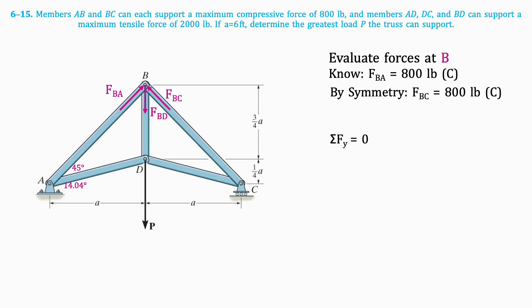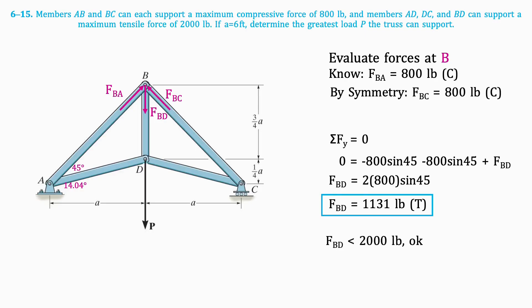Afterwards, we can write an equation for the sum of the vertical forces. The resulting equation is as follows, which when isolated for FBD results in a tension force of 1,131 pounds. The question tells us that the maximum force that FBD can support is 2,000 pounds, and our answer satisfies this constraint.